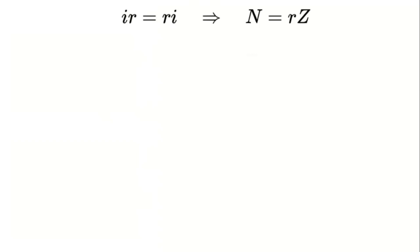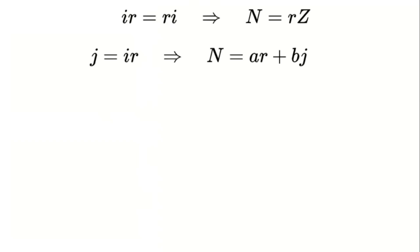To make this interesting, we need to assume that i times r does not equal r times i — in other words, they don't commute. So let's define a new entity. We'll call it j, and say that j is equal to i times r. Now our number n becomes a times r plus b times j. But before we get too excited, we have to make sure that we can multiply two such numbers without breaking the system.